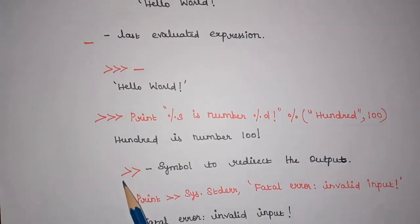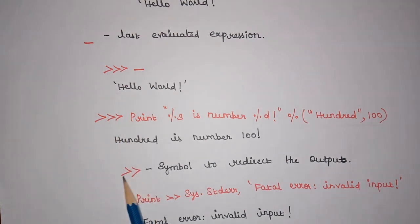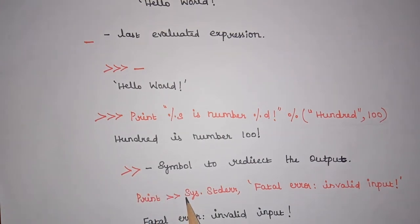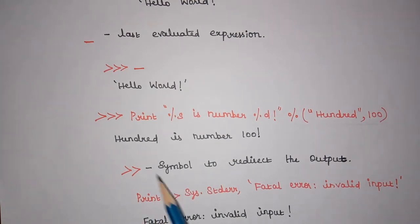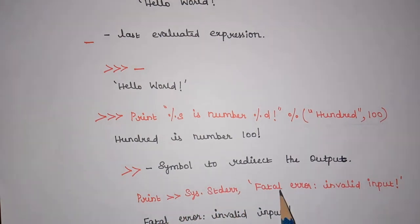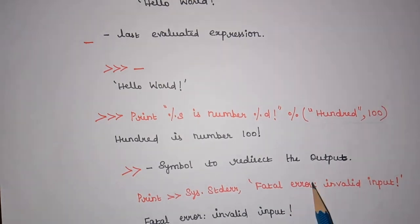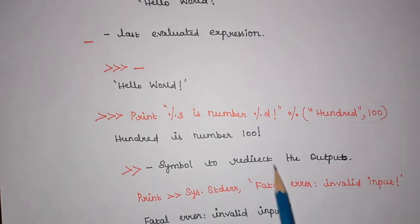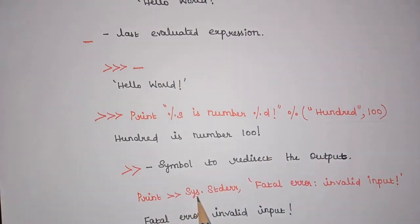We can also use the >> symbol with the print statement. Here we are using two arrows. This is used to redirect the output. For example, print >> sys.stderr followed by an error message — the two arrows redirect the output rather than printing it directly. It redirects and prints the message, such as 'fatal error: invalid input'.